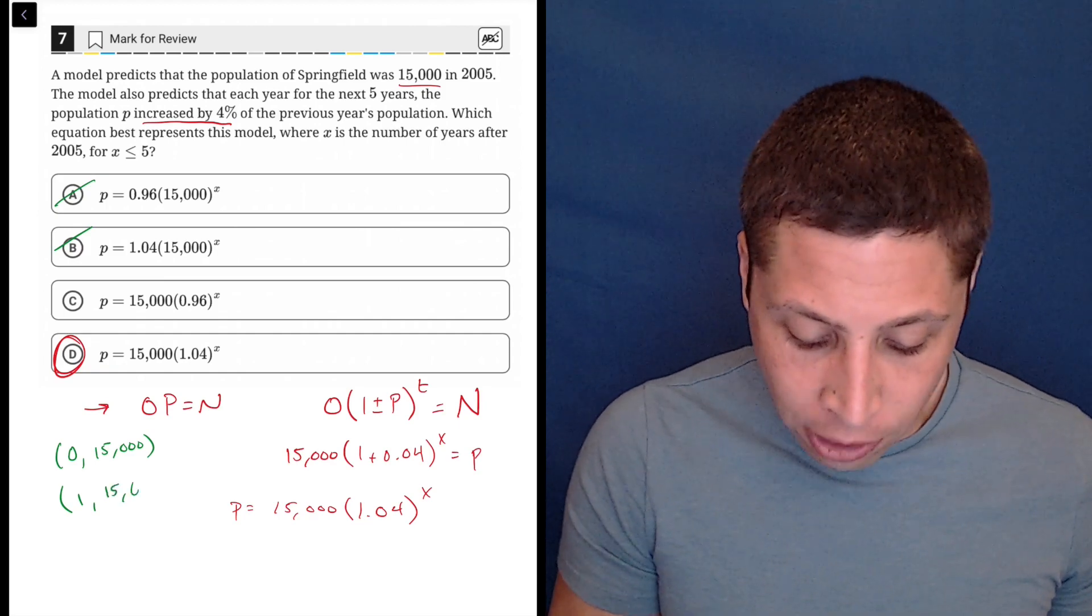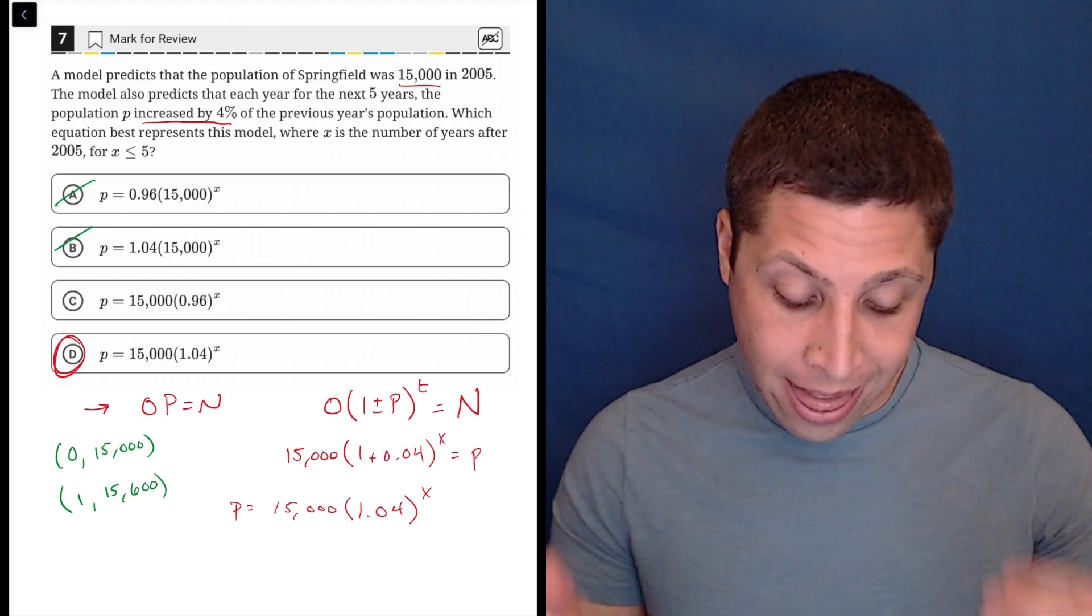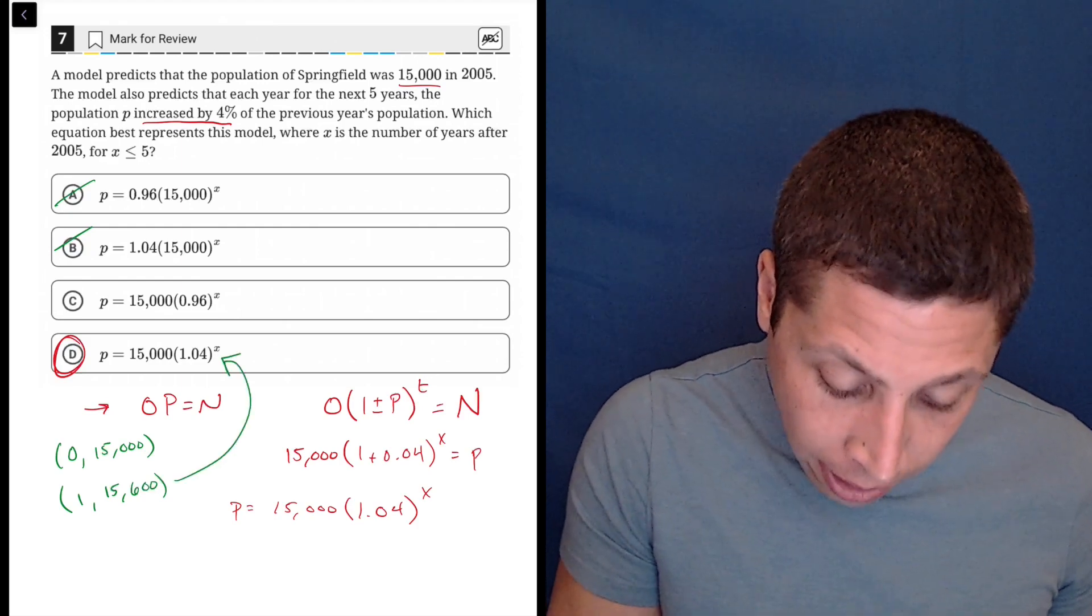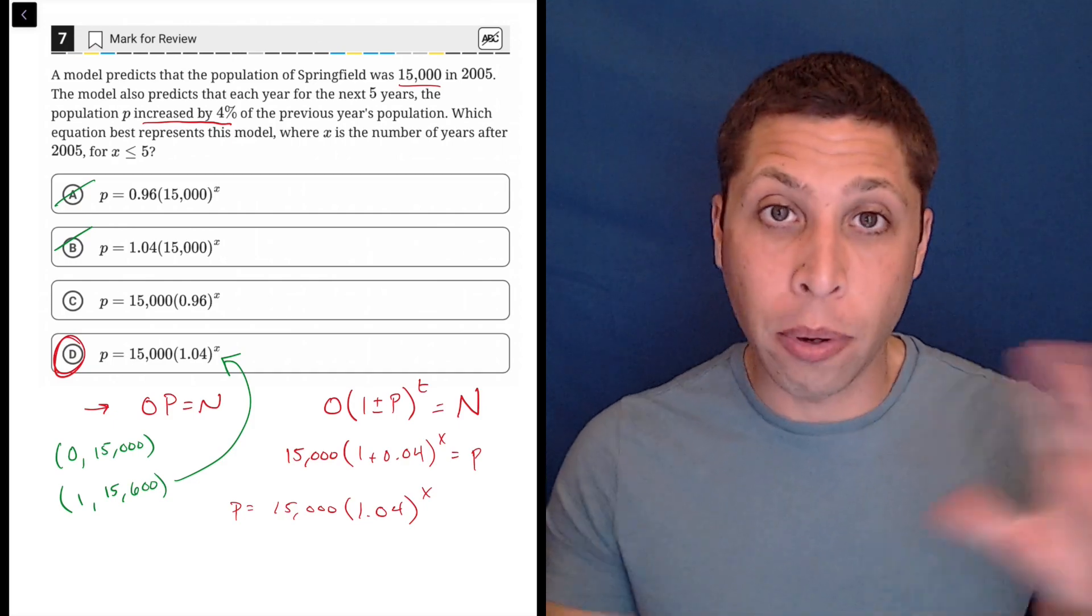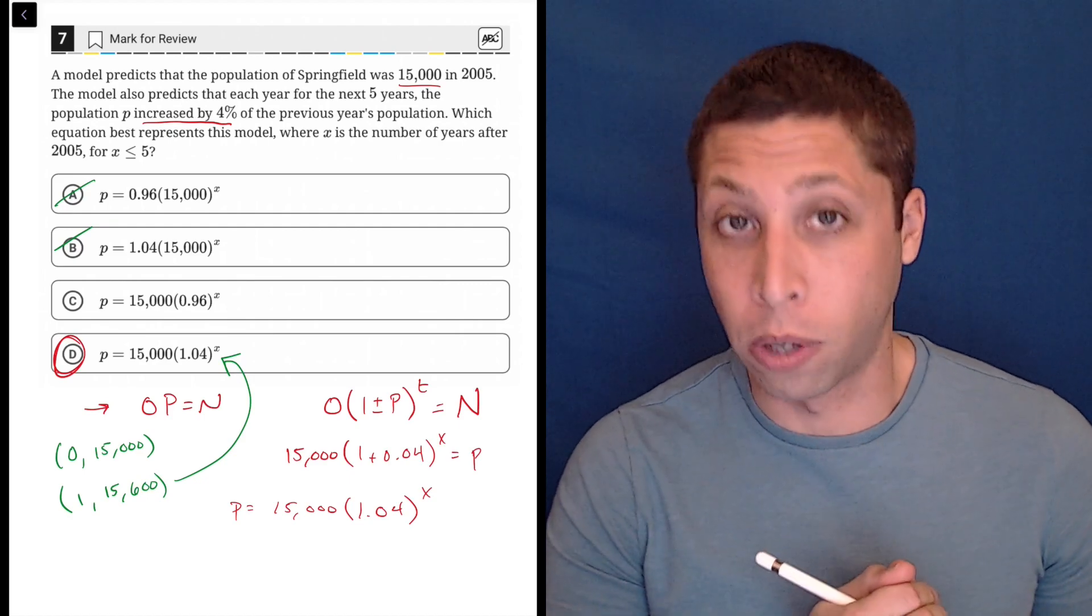So if I increased by that amount, I would have 15,600. And that point is only going to fit in choice D. Choice C would give us minus 600, so it would be something like 14,400.